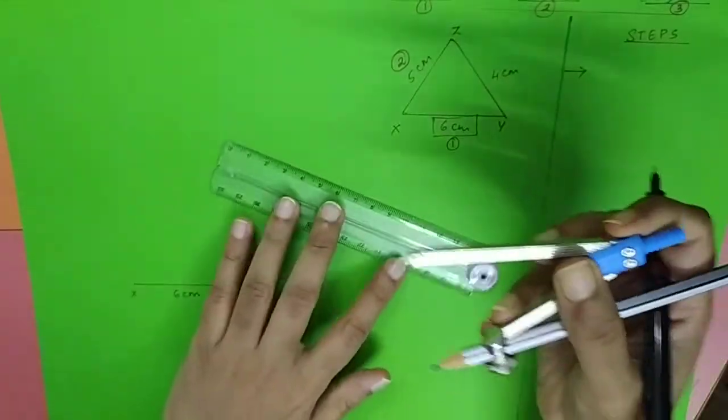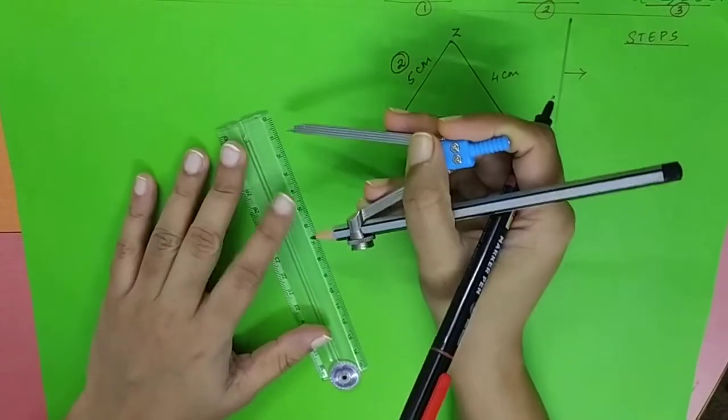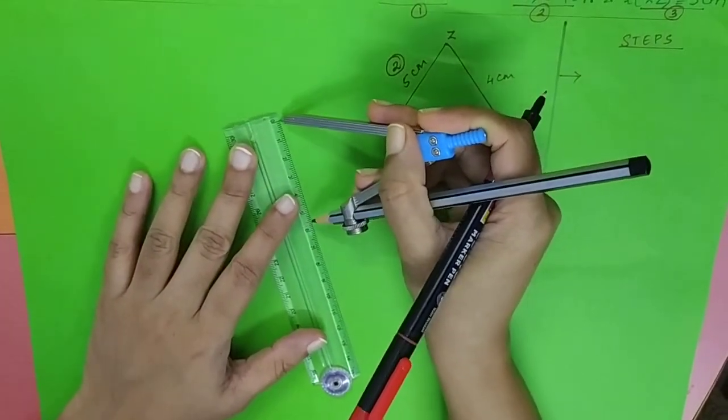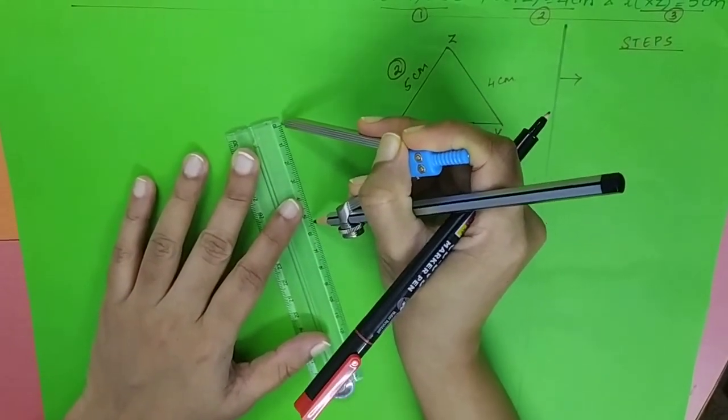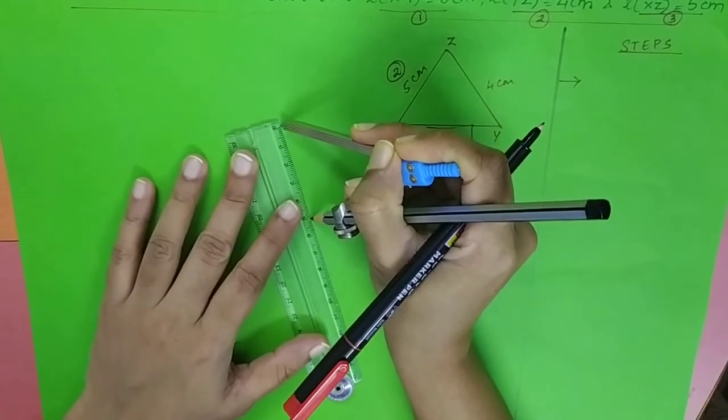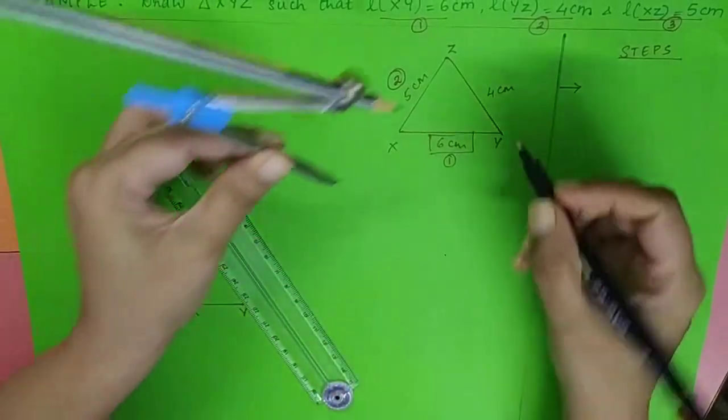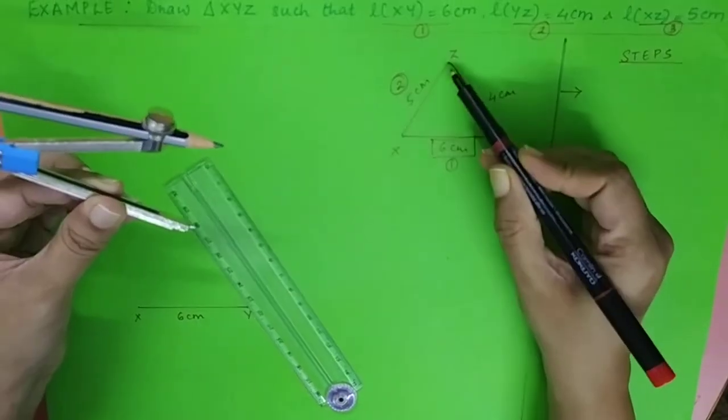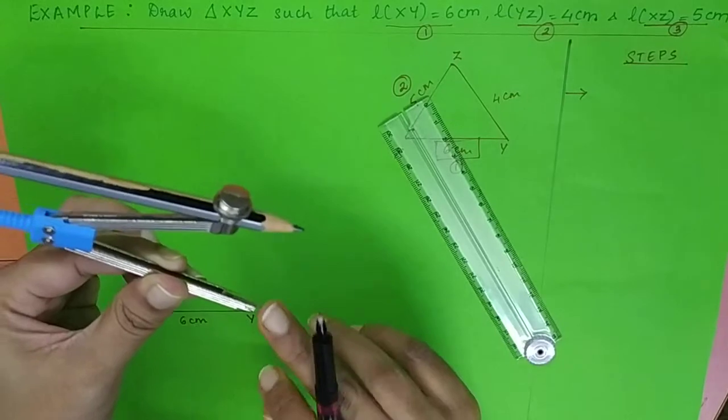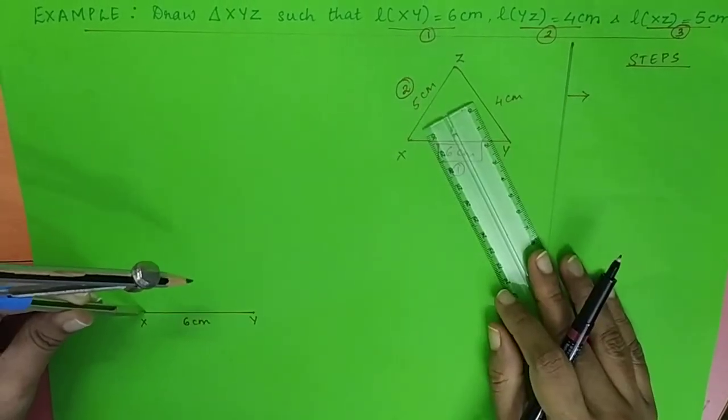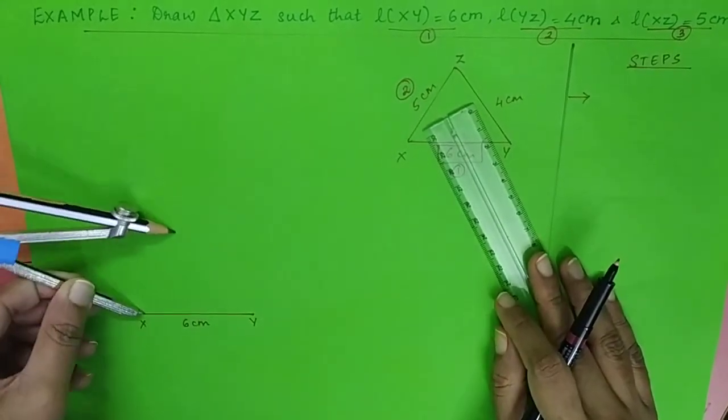You take the compass, you open it up to 5 centimeters - that is, you place it from 0 to 5. Now I got the length of this particular side of 5 centimeters on the compass. This is length XZ, so I place the pointer on point X and mark an arc.